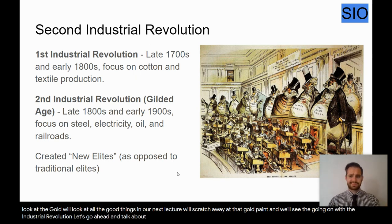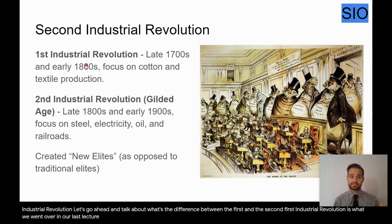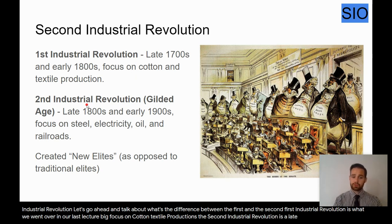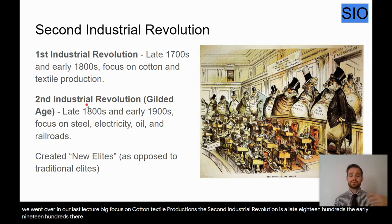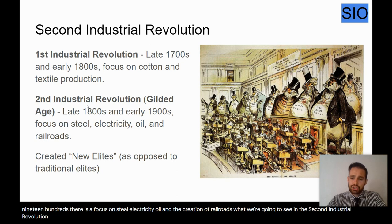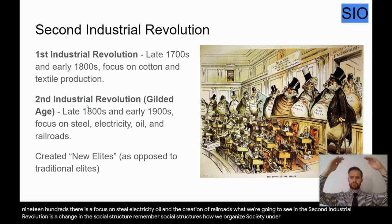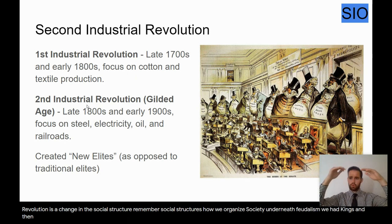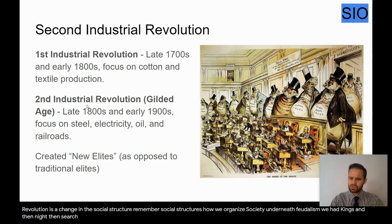What's the difference between the first and second Industrial Revolution? The first is what we covered in our last lecture — a big focus on cotton and textile production. The second industrial revolution is the late 1800s to early 1900s, with a focus on steel, electricity, oil, and the creation of railroads. What we're going to see in the second industrial revolution is a change in the social structure — how we organize society. Under feudalism we had kings, lords, knights, then serfs. The industrial revolution is going to change that.